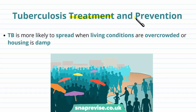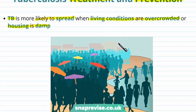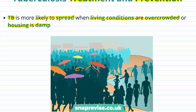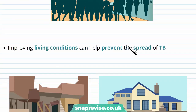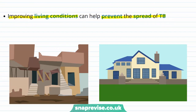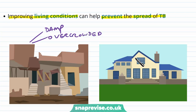Knowing the treatments and prevention methods for TB is very important. TB is more likely to spread when living conditions are very overcrowded, where people are in close contact a lot of the time, or if housing is very damp. Overcrowding increases the risk that droplets in the air can spread to other people, and damp housing increases the environment in which TB can survive. We can improve living conditions — moving from damp and overcrowded housing to more sanitised and spacious living — which should help prevent the spread of TB.